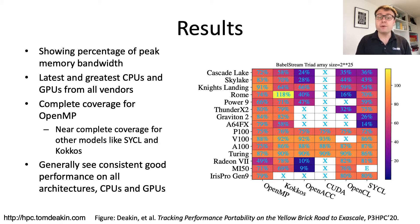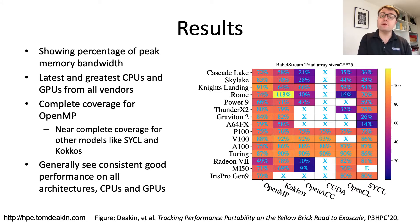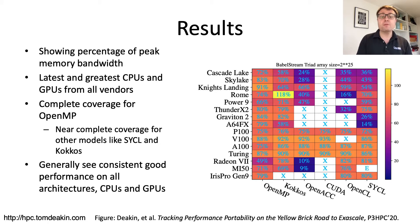SYCL and Kokkos are also doing well with near-complete coverage. Importantly, OpenMP shows very consistent results for the Triad kernel across all processors — mostly 70% or above of peak bandwidth. Some lower results, such as on the Radeon 7, are attributed to compiler immaturity; in that case the GCC compiler's OpenMP back-end targeting AMD GPUs is less mature than other implementations. We expect compilers to improve as many will be used at Exascale.